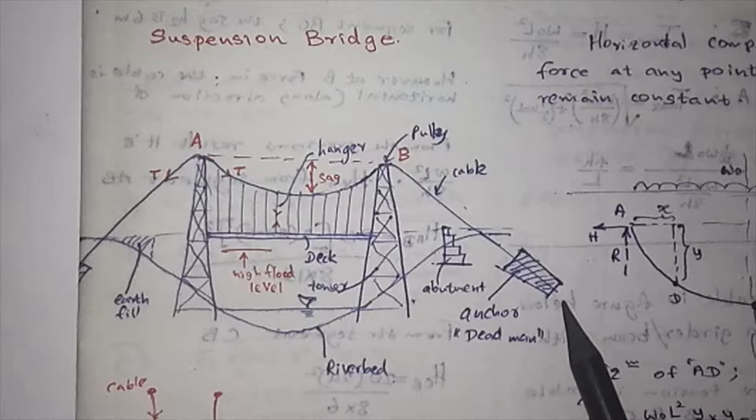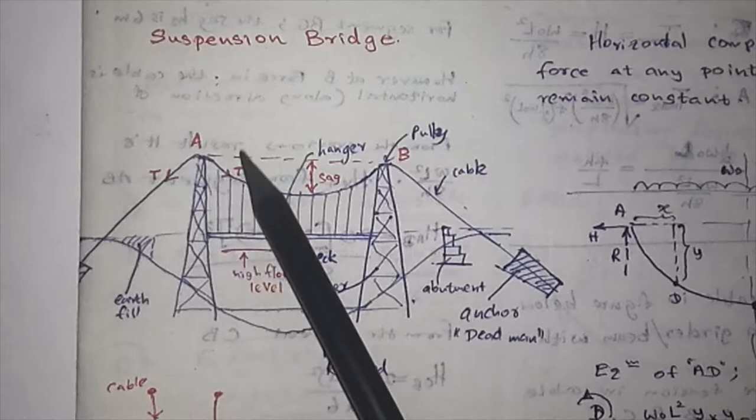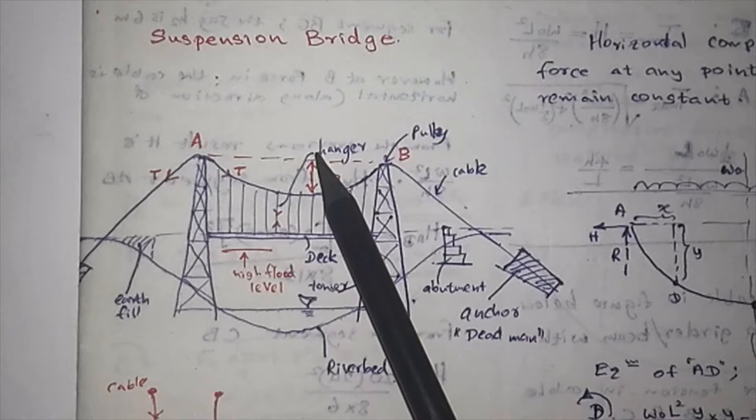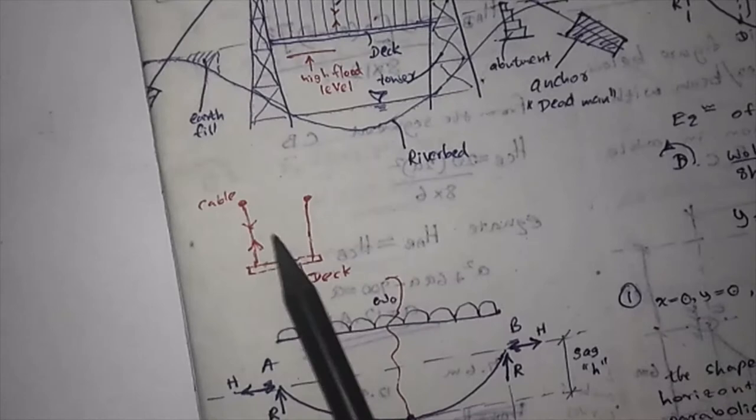The deck is hanged with hangers—hanger cables to the main cable. This main cable sags, and this is the amount of sag in the main cable. Tensile forces are generated. The deck is hanged by these type of cables and the tensile forces are there.